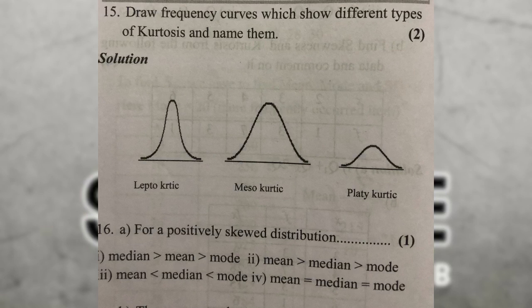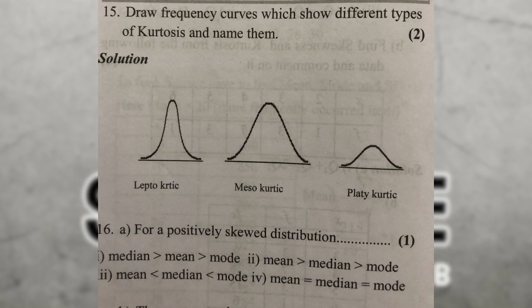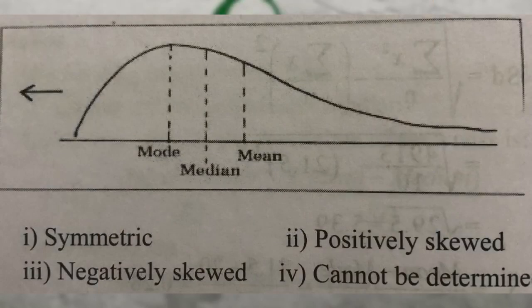For a positively skewed distribution, the main focus is on the mean. Positive skewness, negative skewness, and symmetric are the types. In this definition of skewness, we will show you the types of skewness: positive skewness and negative skewness are symmetric.